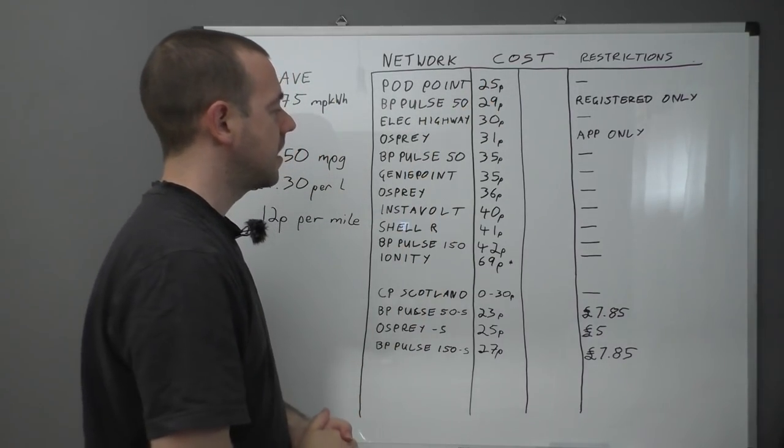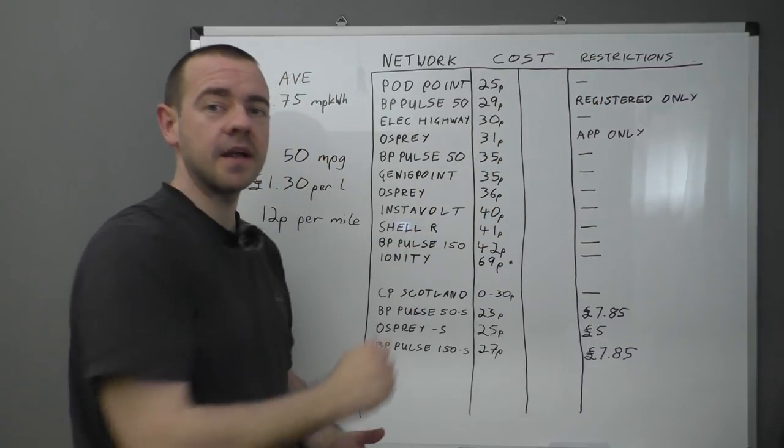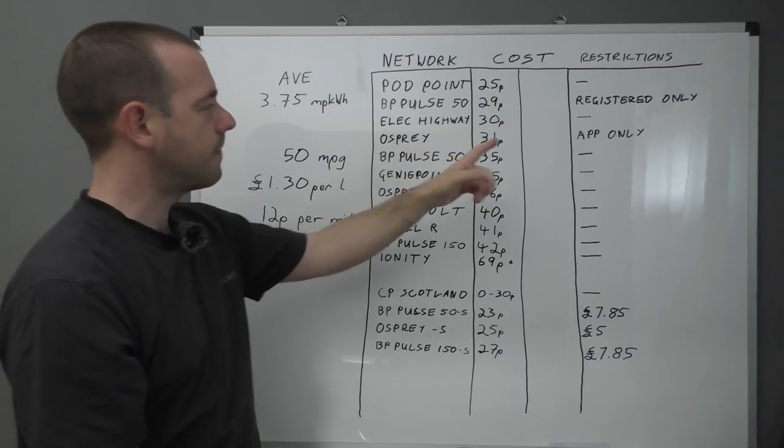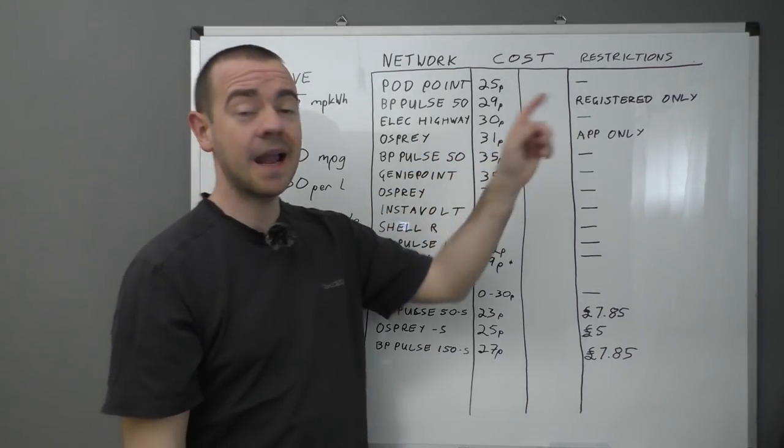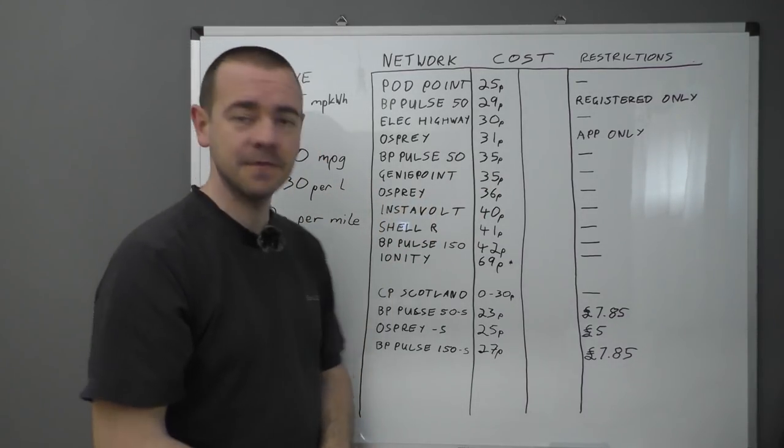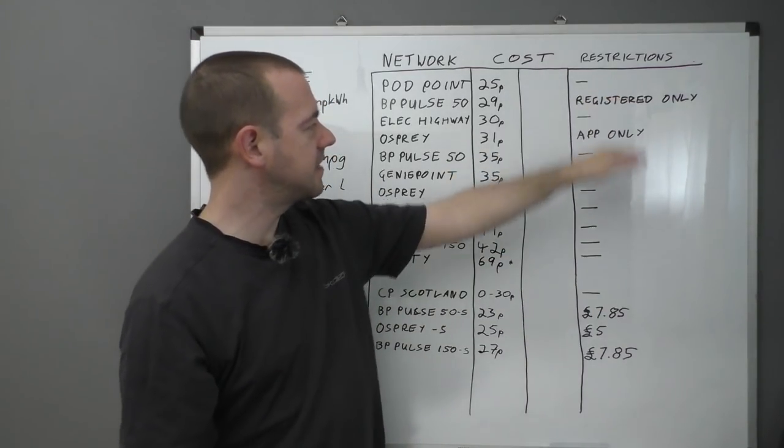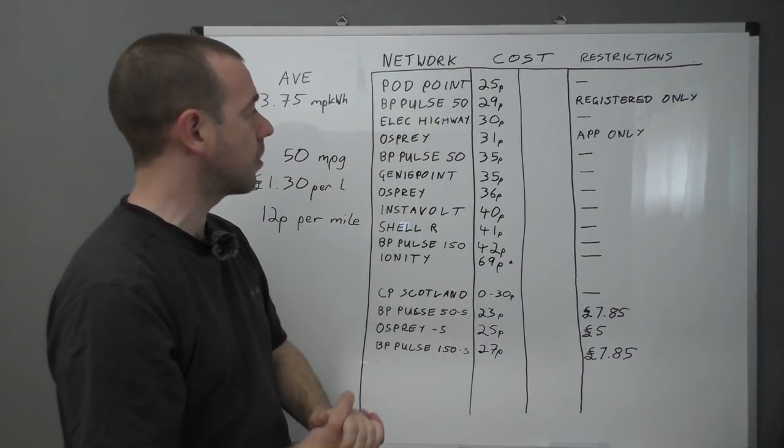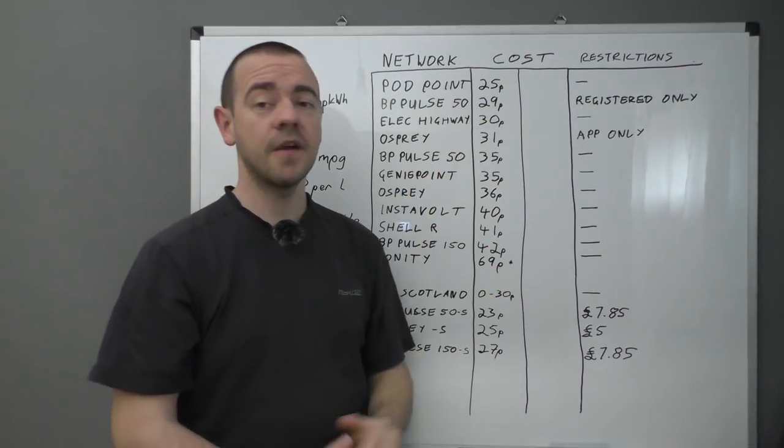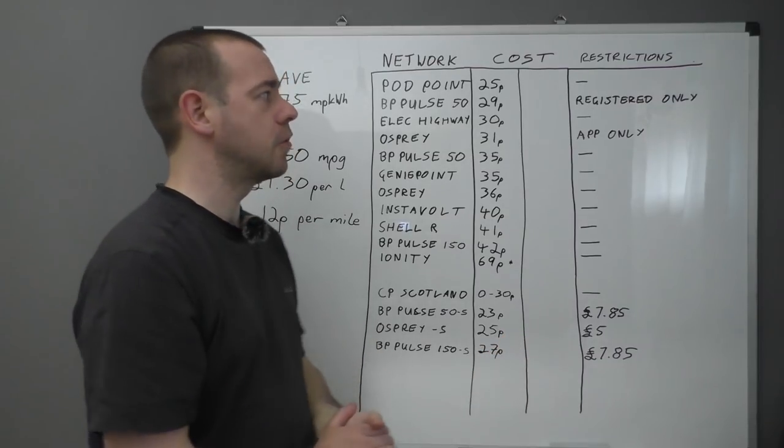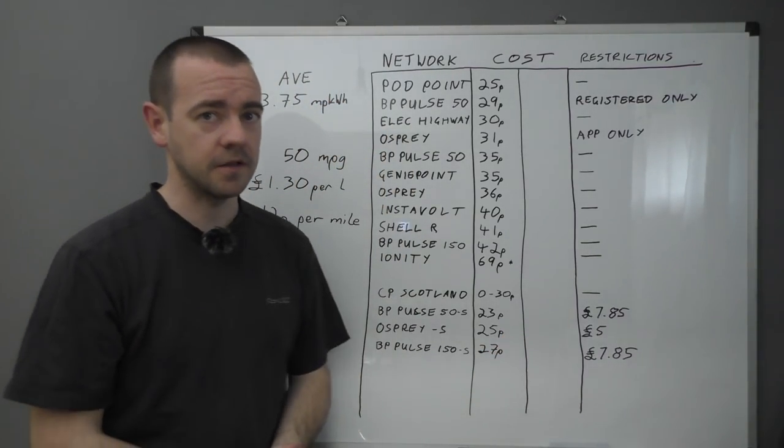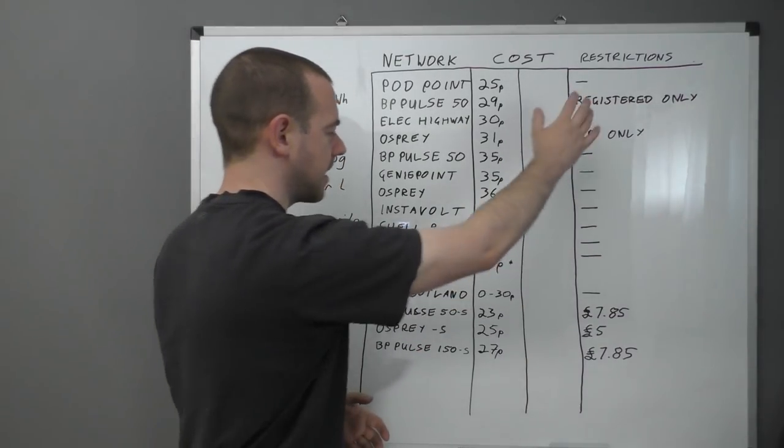This restrictions bit on the right-hand side there, that effectively means, well, this, for Osprey, to get 31 pence, you have to use the app. Their normal contactless payment is 36 pence. To get the BP Pulse on a 50 kilowatt charger at 29 pence, you have to be a registered person and, I believe, use their app to get that price. That is not the same price as a contactless payment. So, that's why we've got this bit down here.